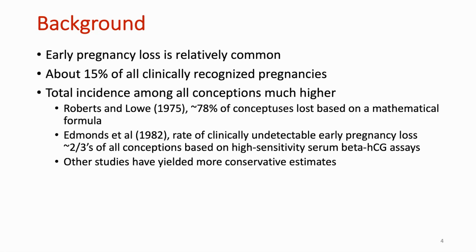Early pregnancy loss itself is relatively common. About 15% of all clinically recognized pregnancies result in pregnancy loss. The total incidence among all conceptions is estimated to be much higher — these are ones before the woman is even aware that she's pregnant. There have been some interesting studies that have tried to estimate this, including one based on a mathematical formula and another based on high sensitivity beta HCG assays. It is estimated that more than half of all pregnancies actually result in early loss.